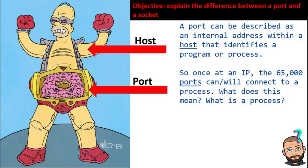You can have multiple programs running on your computer — that is, multiple processes — and each process will have its own port. If I open up Chrome and have an email tab open, there's a port. If I'm on Reddit, that's a whole other port. There are over 65,000 ports.